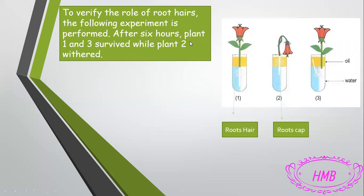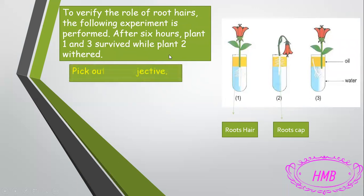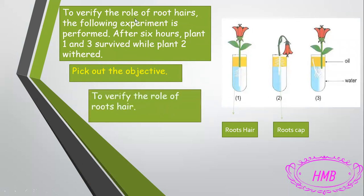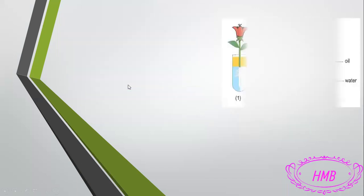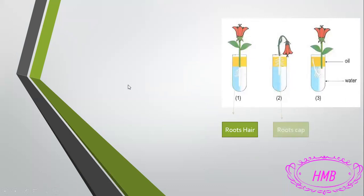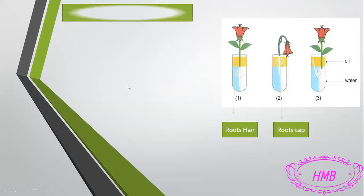After waiting six hours and recording the results: in tube one and tube three the plants survived and stayed alive, while in tube two the plant withered, as you can see in the table. The first question: pick out the objective. Why did we make this experiment? The answer is: to verify the role of root hairs.